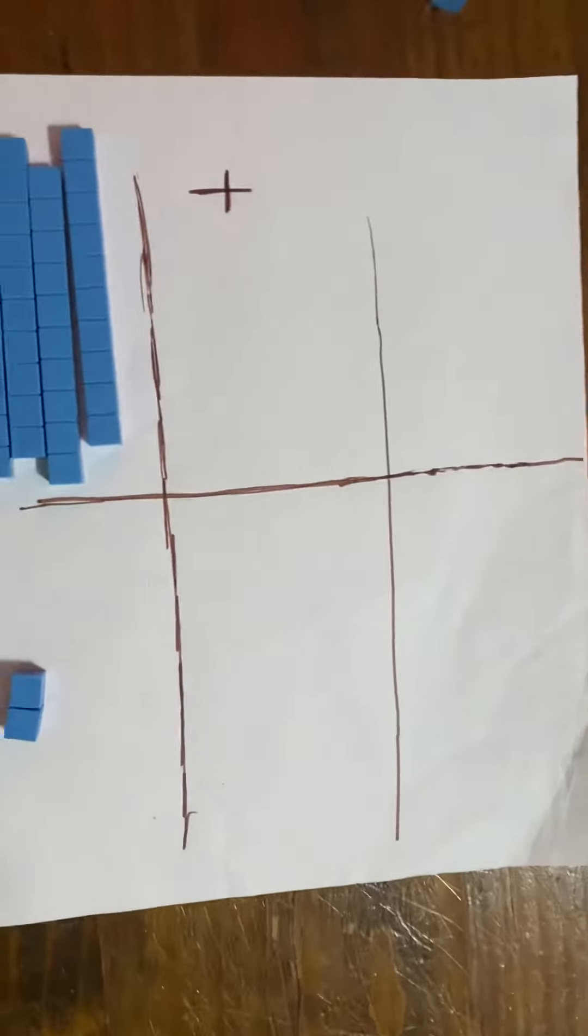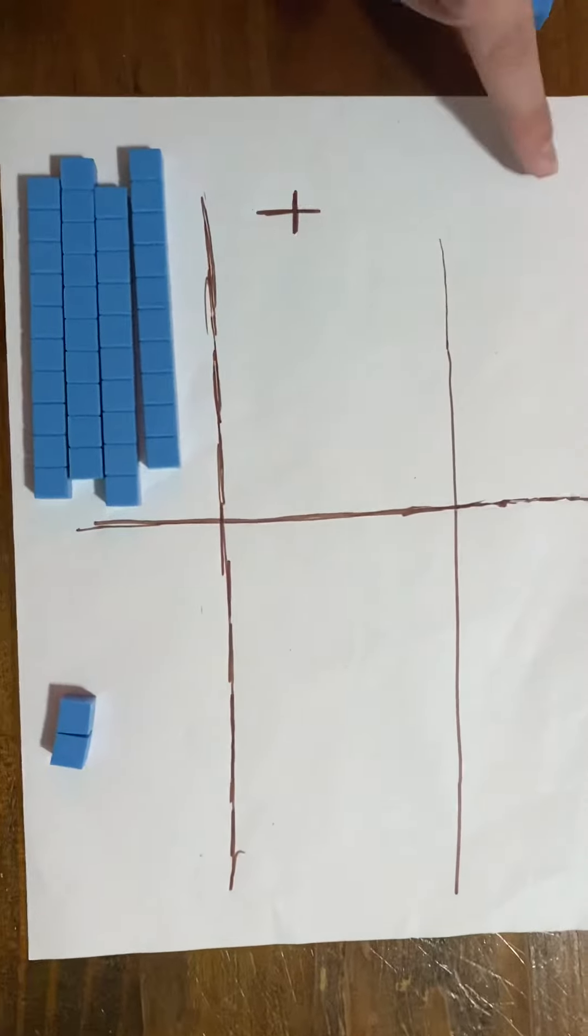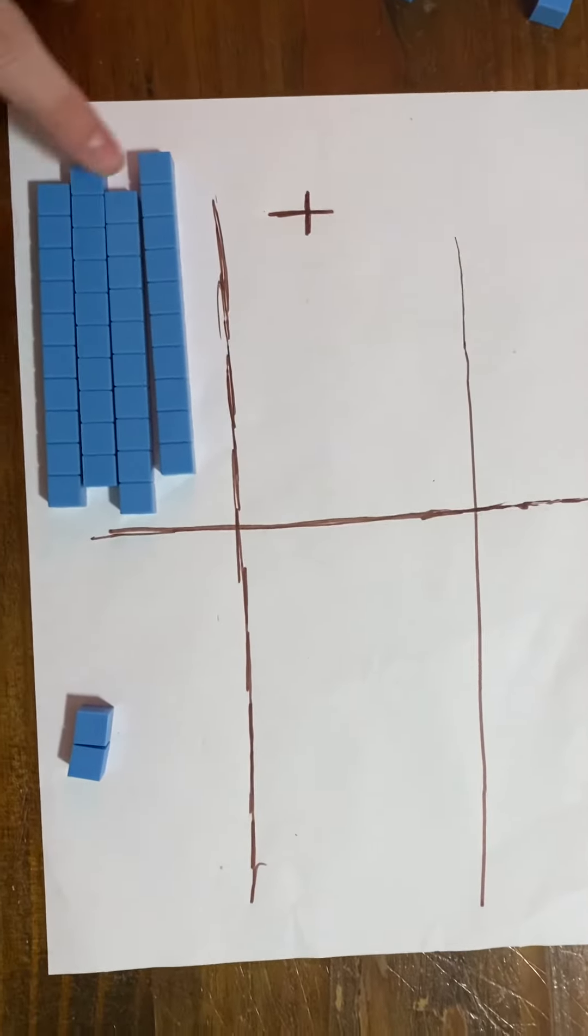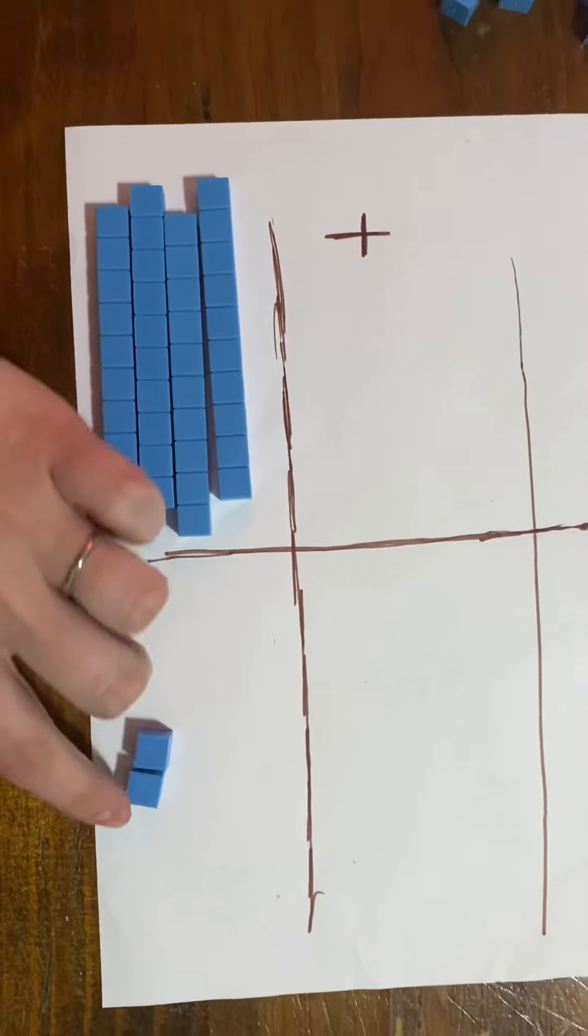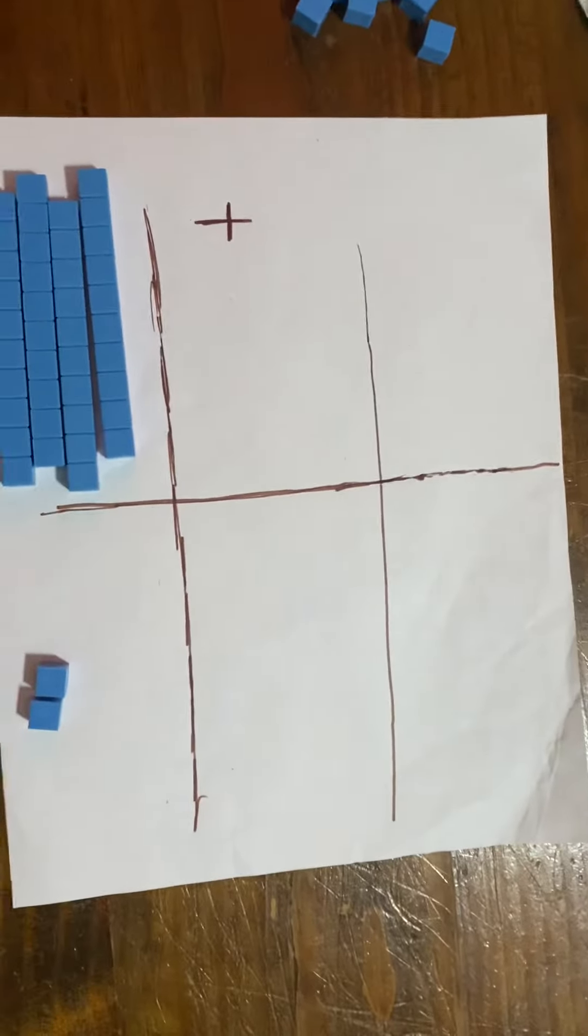So we have 26 and 16. If we add those together, we have 42. And that's why regrouping works.